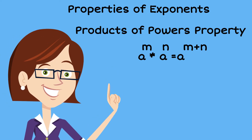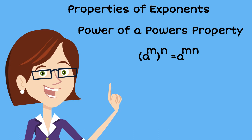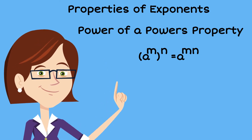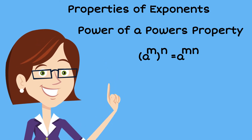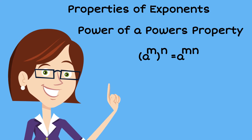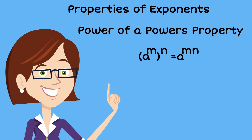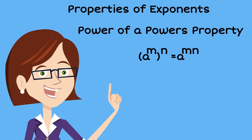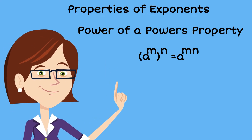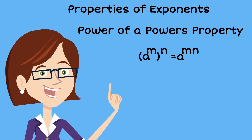The second property is called the power of powers property. We've got a to the m all raised to the nth power. That is equal to a to the m times n, and we're going to multiply the exponents.